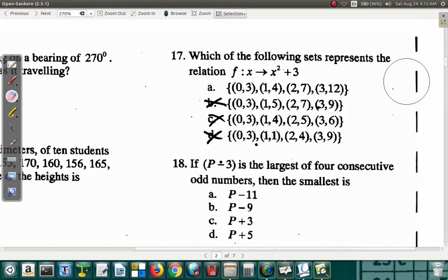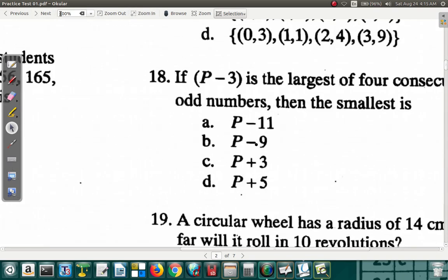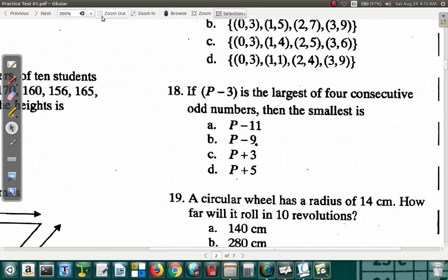Now, let's erase these. We can move on to question 18. See what 18 says. Let's zoom it up a bit. Question 18 says: If P minus 3 is the largest of 4 consecutive odd numbers, then the smallest is. Alright, 4 consecutive odd numbers. Remember what odd numbers are—like 1, 3, 5, 7, 9, 11, 13, and so on and so forth. Consecutive odd numbers.